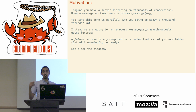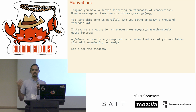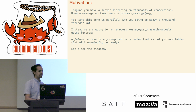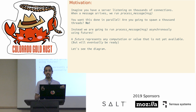Let's talk about some of the motivations for Futures. Imagine you have a server and you want to listen to thousands of different connections, which is very common. When a message arrives, you get that message and call some function — say, process_message. We want this to be parallel, so one idea is to spawn thousands of threads, basically one thread per connection, but this doesn't scale well. Instead, this is one of the use cases for Futures: we're going to run process_message asynchronously using Futures.